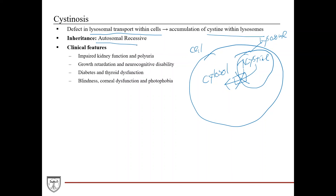This is an autosomal recessive disorder. The accumulation of cystine within lysosomes disturbs many processes within the cell and results in tissue damage. This can result in impaired kidney function and polyuria, growth retardation, neurocognitive disability, diabetes, and thyroid dysfunction. The cystine crystals can accumulate within the cornea, causing corneal dysfunction, photophobia, and eventually blindness.